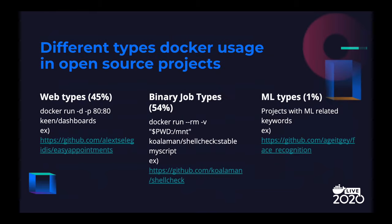Among the projects with Dockerfile, we categorized them into three types. First, web types, which export a port and run servers. Second, binary job types, which can be run to completion using Docker run. Third, ML types, whose repositories are tagged with ML keywords. Later, we will show you different learnings from each type when Dockerizing and productionizing.